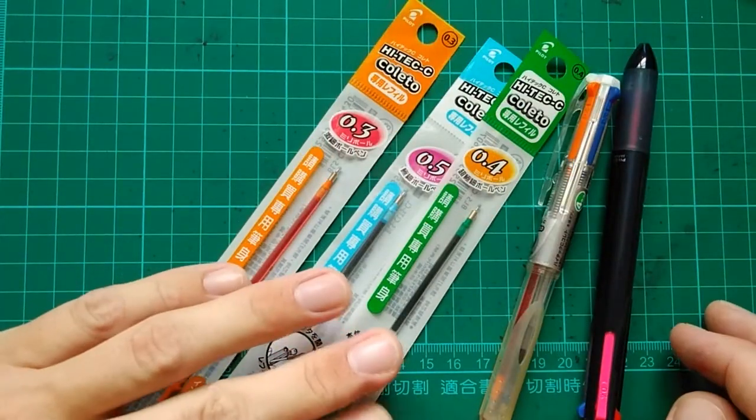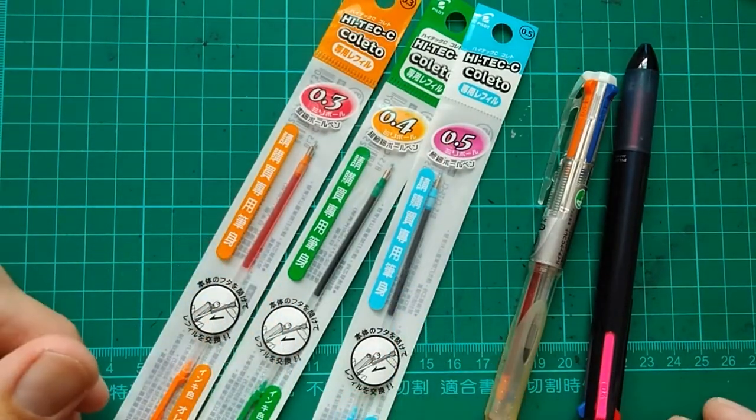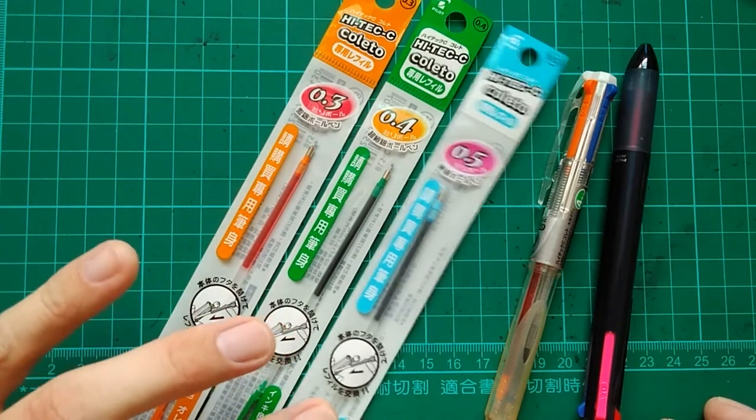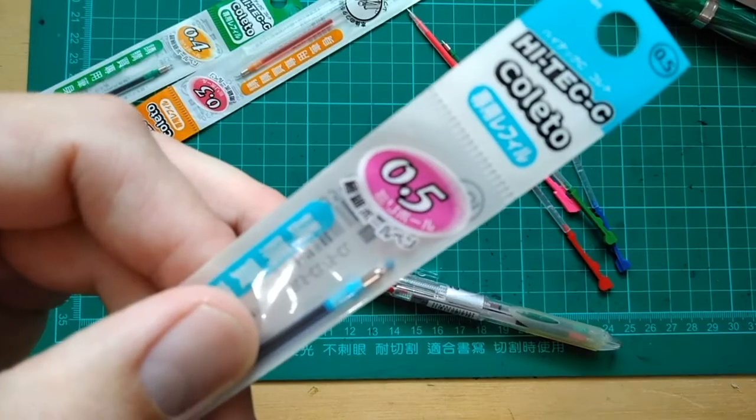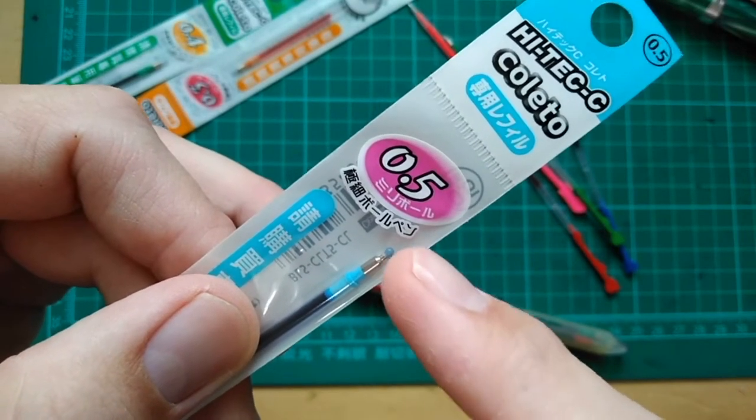These are found in just about every stationery store here in Taiwan, with dozens of refill colors like this on display. A note when you buy one, make sure the nub of plastic is still in place on the end to ensure that it hasn't dried out.